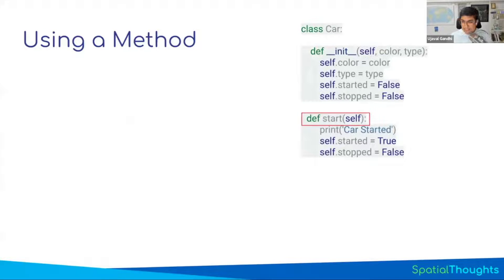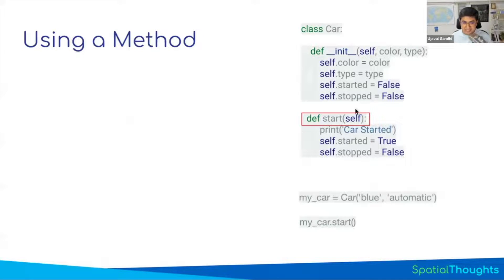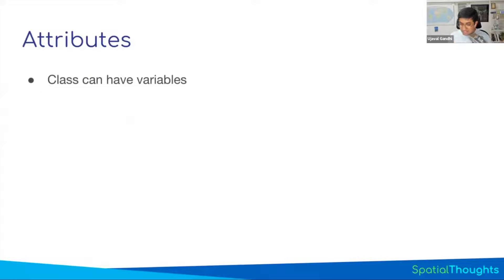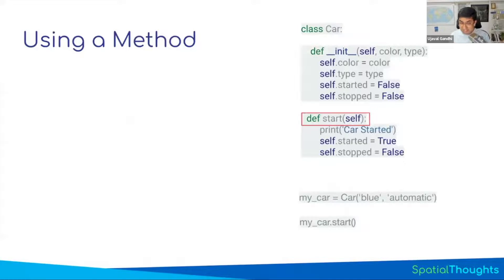So you have a class and you want to use the start function. You may ask how do I run the start function — but the first argument is self, so you need an object. First construct an object; once you have an object, you can call that function on that object. Calling my_car.start will run the start function on the my_car object. The class can also have variables, and those are called attributes. Functions inside a class are called methods; variables inside a class are called attributes.